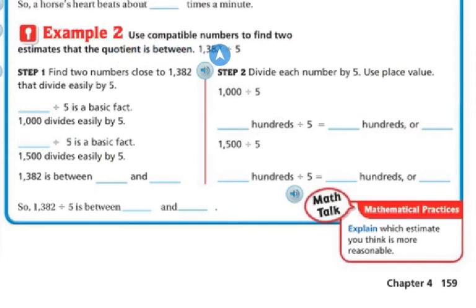Example two: use compatible numbers to find two estimates that the quotient is between. So 1,382 divided by 5. If you're going to find two numbers that are close to 1,382 that can easily divide by 5, you have to think, well, 5 is an easy number. It's got a great basic fact.